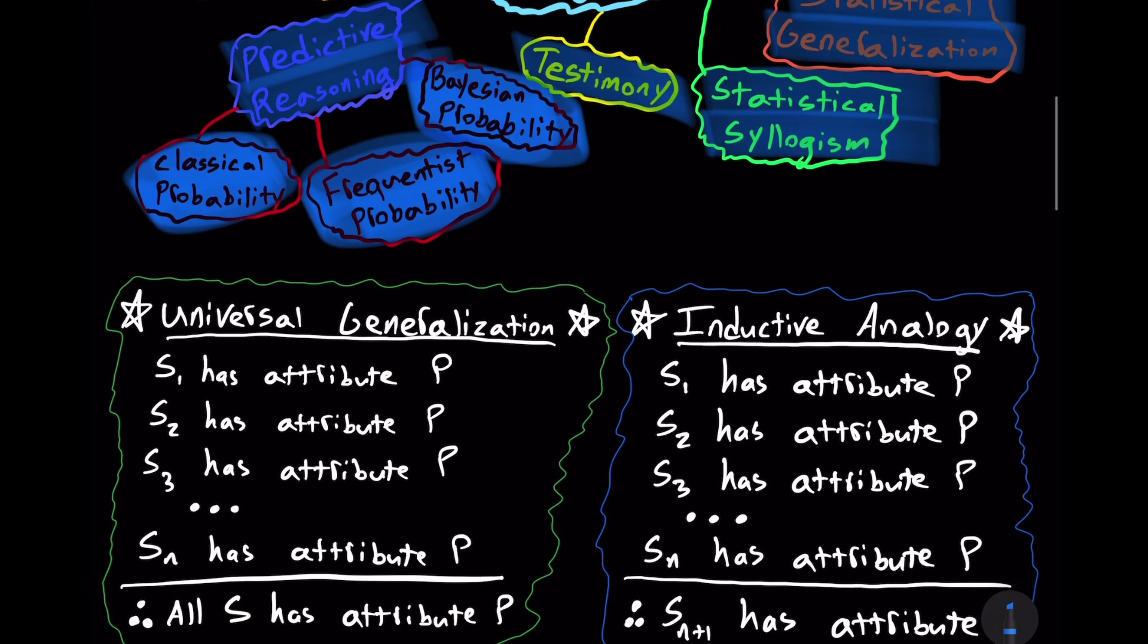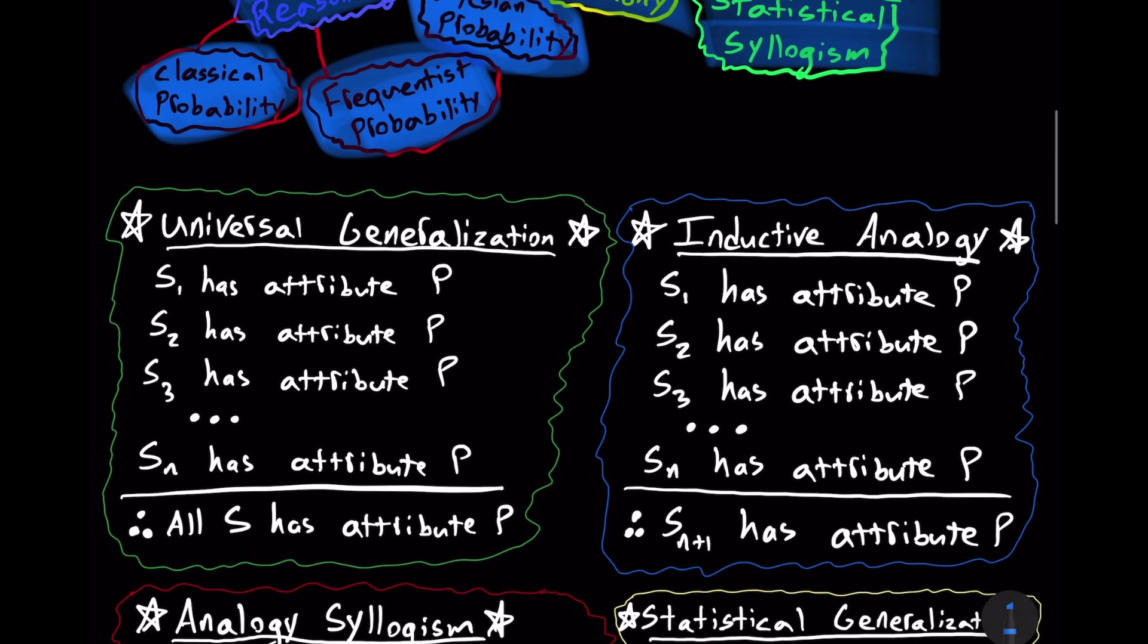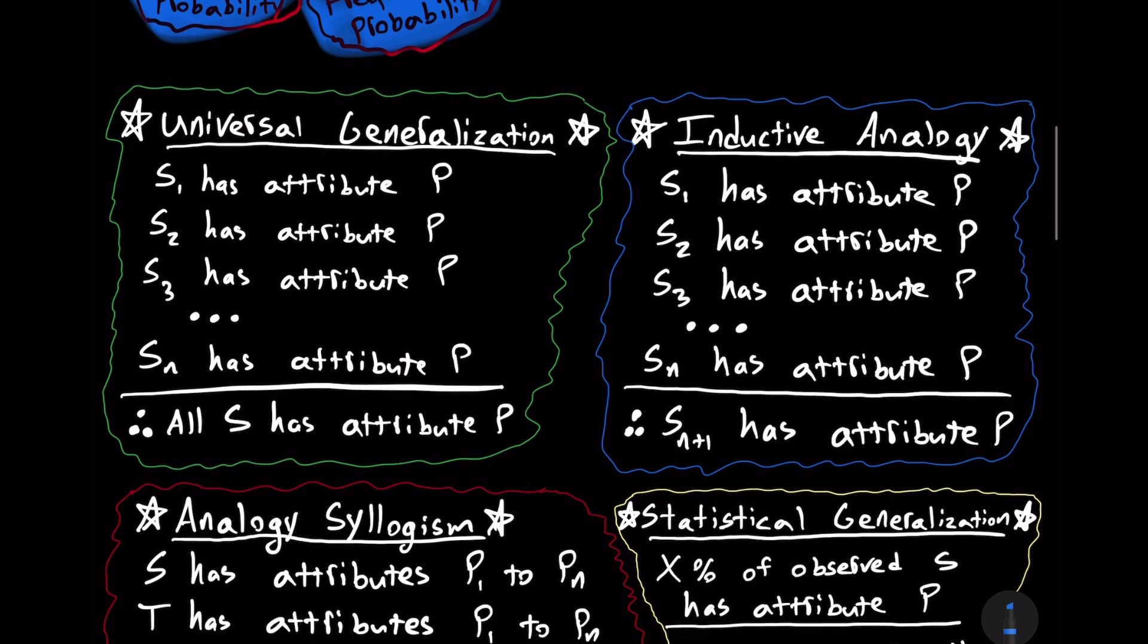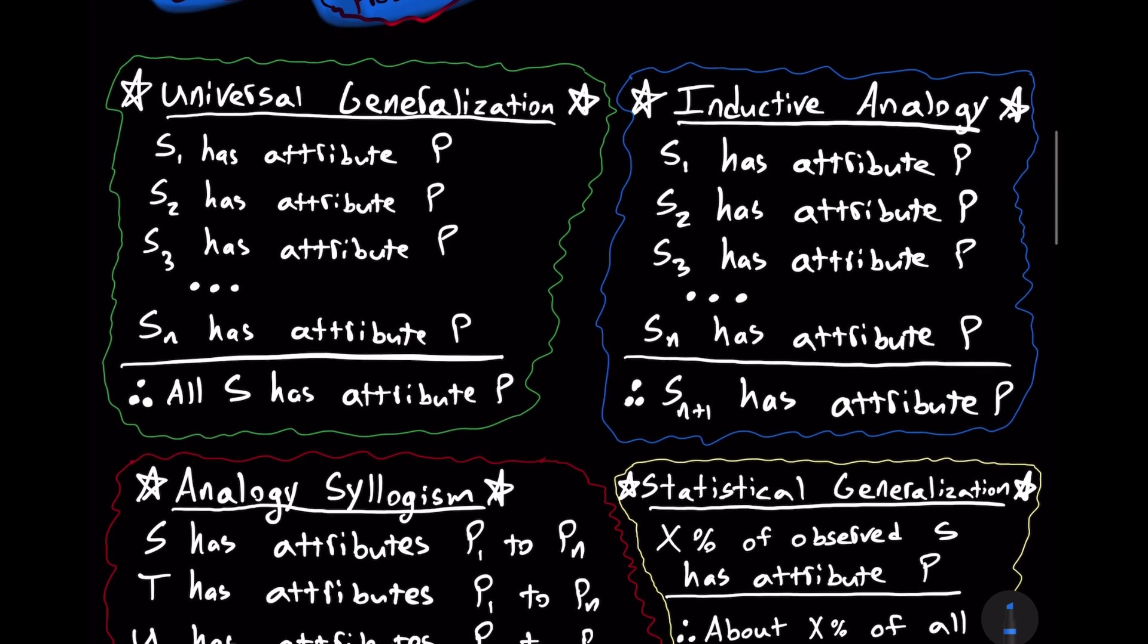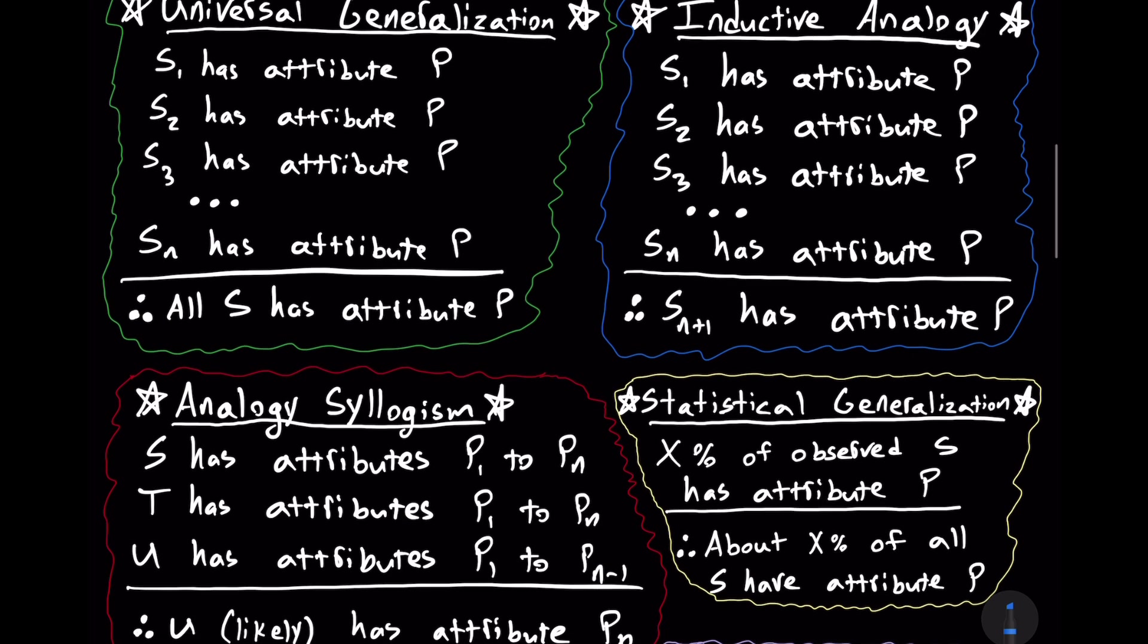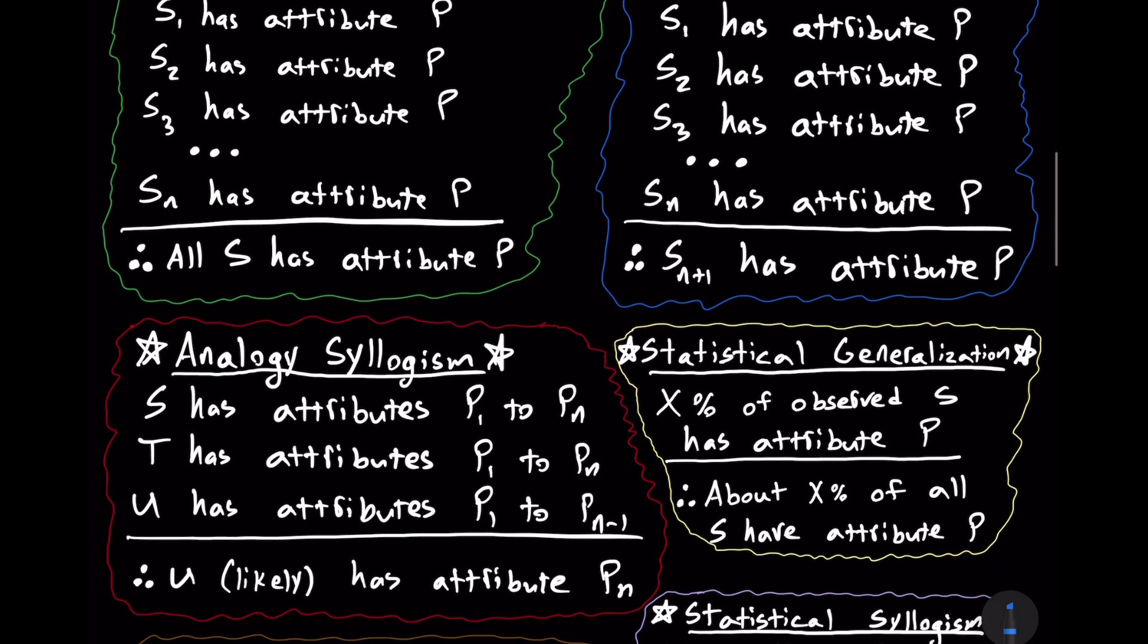Now, Bertrand Russell once humorously said, there are two kinds of logic, deductive and bad. So I guess we're going to preview bad logic here. But in any case, what is induction? Now, sometimes an older textbook will only define induction as an argument that moves from more particular propositions to more general universal propositions, and that's it.